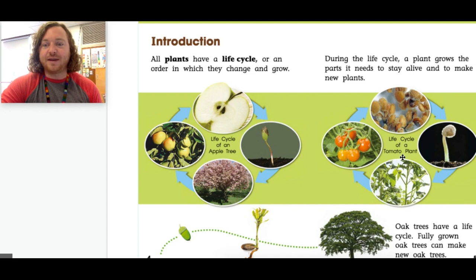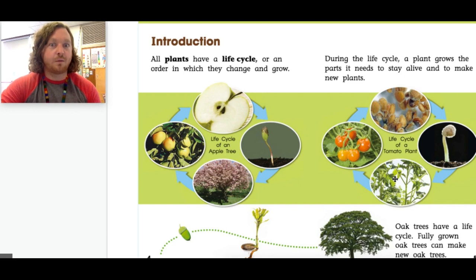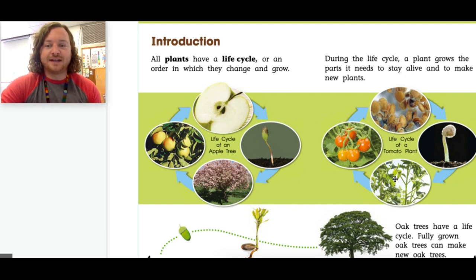And here's the life cycle of a tomato plant. Once again, it starts with a seed, the seed starts to grow, soon it will make flowers, and flowers get pollinated and the flowers turn into tomatoes. Do you know what color tomato flowers are? They're yellow — tomato flowers are yellow! Now, oak trees have a life cycle too. Fully grown oak trees can make new oak trees. You see the acorn, then the acorn grows into a little sapling, and eventually it grows into a tree.